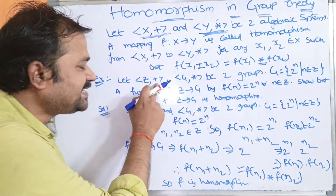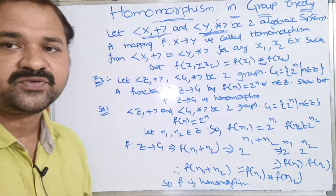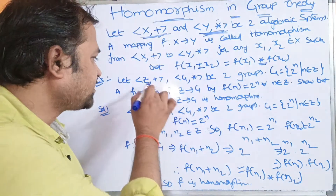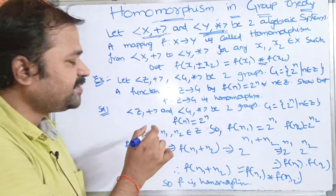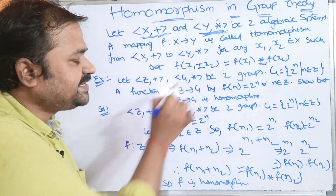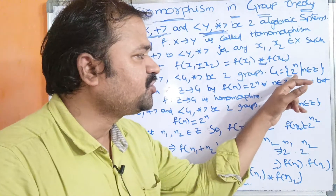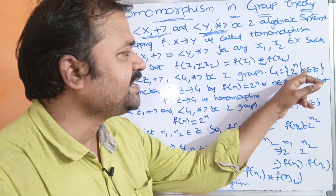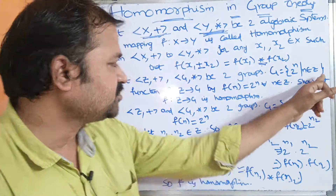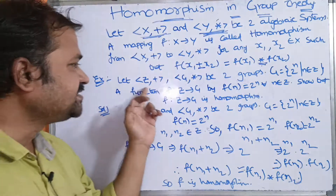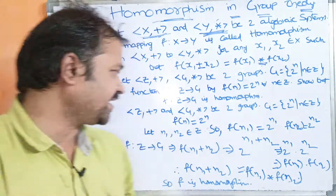Let (ℤ, +) and (G, ⋆) be two groups. The first group has set ℤ and binary operation +. The second group has set G and binary operation ⋆, where G = {2ⁿ | n ∈ ℤ}. So ℤ is the first algebraic system's set.